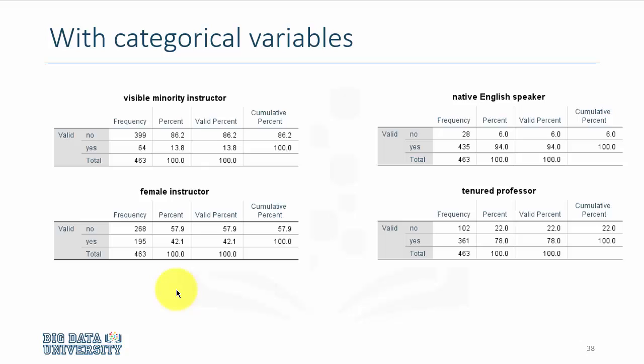Females accounted for 42% of the instructors. The correct way to describe this is to say 42% of the courses were taught by females compared to 58%. And the same applies here, that 13.8% of the courses were taught by instructors who were visible minority. And similarly, 78% of the instructors or 78% of the courses were taught by tenured professors. Why am I saying 78% of the courses were taught by tenured professors rather than saying 78% of the professors were tenured?